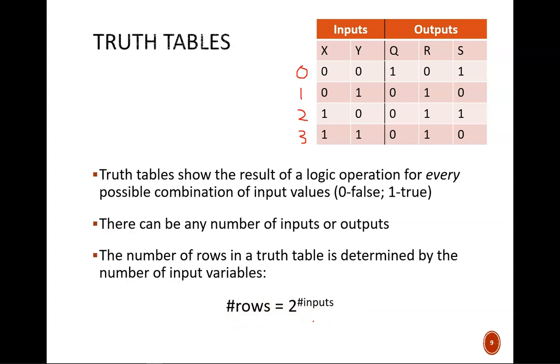So, two inputs means four rows, three inputs means eight rows, four inputs means 16 rows. In a case with, say, seven input variables, the number of rows would be 2 to the 7, or 128. The tables can get large quickly.